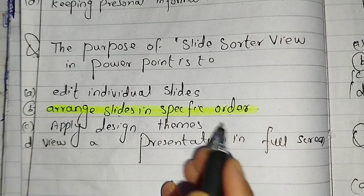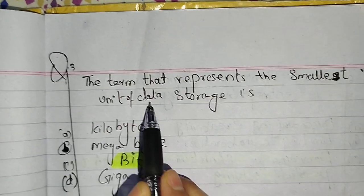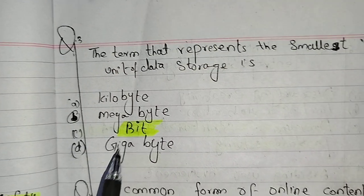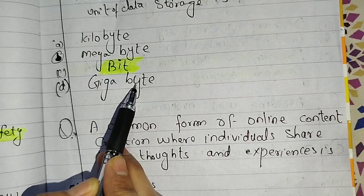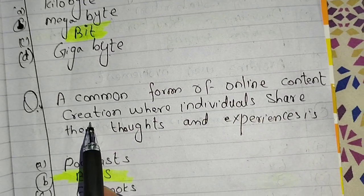Let's see the next MCQ. The term that represents the smallest unit of data storage: kilobyte, megabyte, bit, or gigabyte. This answer is bit. Byte is always bigger.